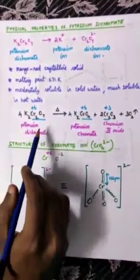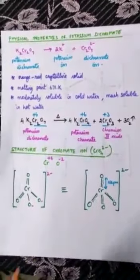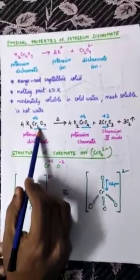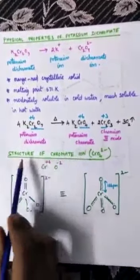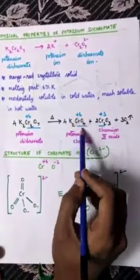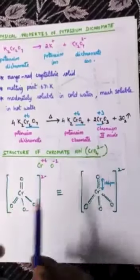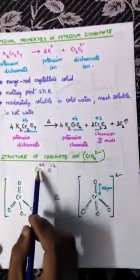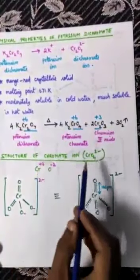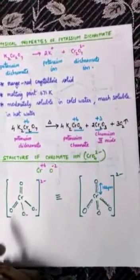This is the right time to distinguish the dichromate ion and chromate ion. The structure of the chromate ion is CrO4²⁻. In the chromate ion, chromium is at plus 6 oxidation state and each oxygen is at minus 2 oxidation state.